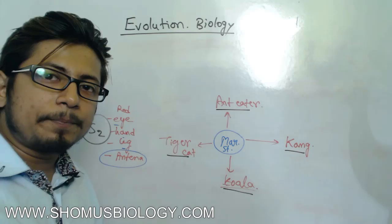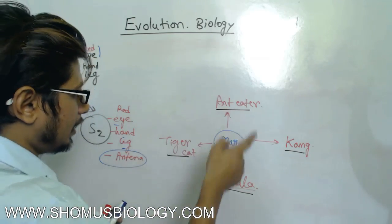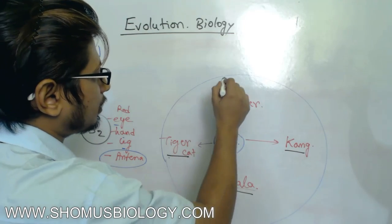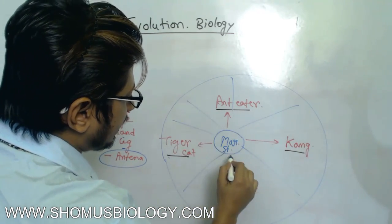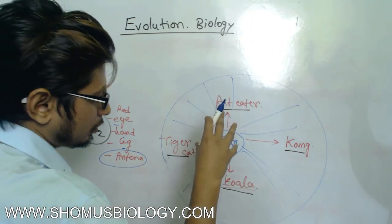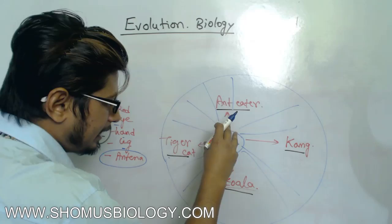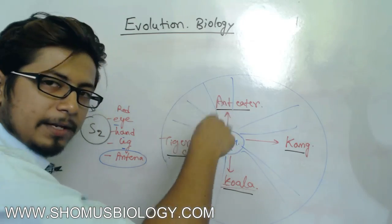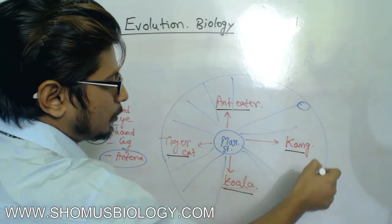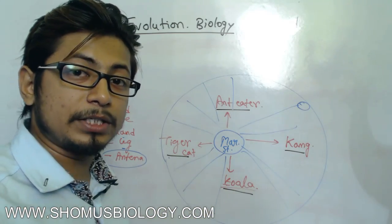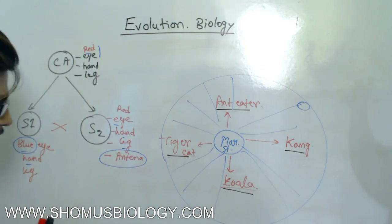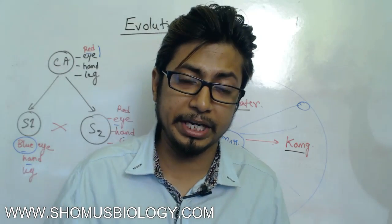And radiation, because they are radiated from a common ancestor, radiated from a stock member which is present in the center. It's like a cycle. Let's consider this as a cycle. All the spokes are connected to the center. The center of the spoke is the stock, and all the spokes at the end have all the organisms which are originated from the common ancestor. This is adaptive radiation.